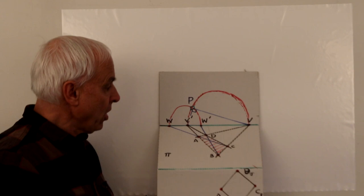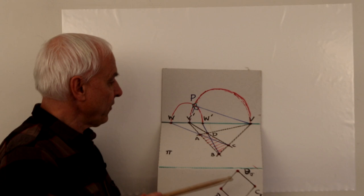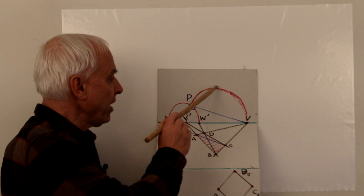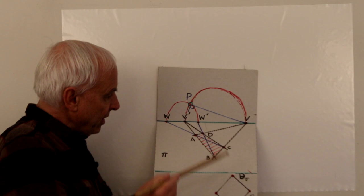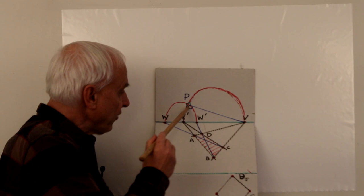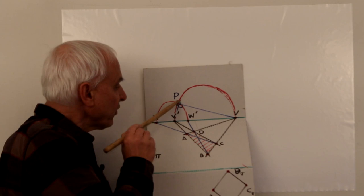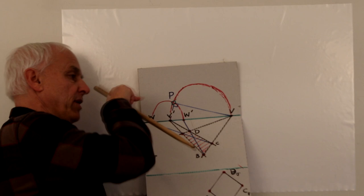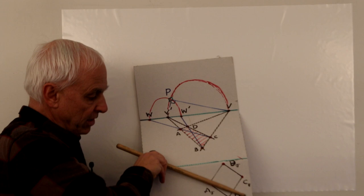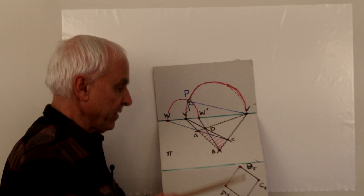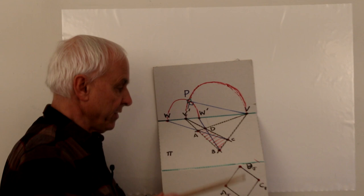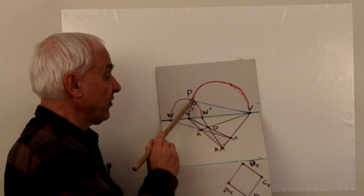Now what about the perpendicularity properties? The fact that P is on the circle with diameter VV-prime means that the directions from P toward V and toward V-prime are perpendicular. These directions are the same as the directions of the sides in the image parallelogram — when you project V from P you get the infinite direction of those sides, and translating down to plane σ gives the direction of those lines. So the two pairs of sides in the image are mutually perpendicular, meaning the image is a rectangle.